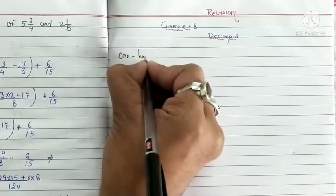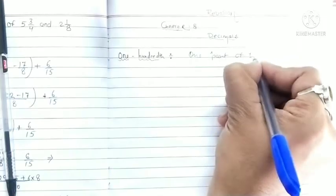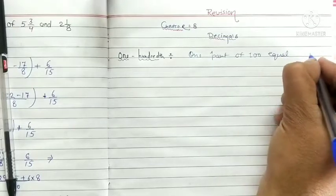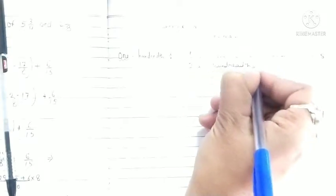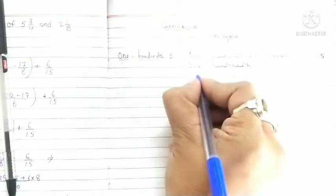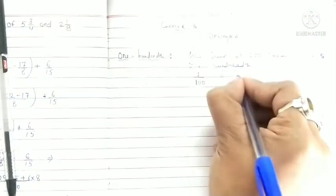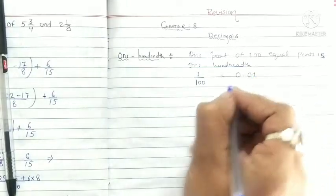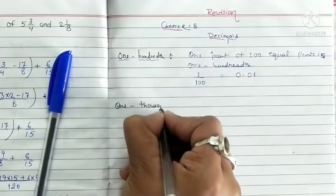First, I have one hundred. One part of hundred equal parts, one upon hundred in decimals is 0.01. Next, one thousand.